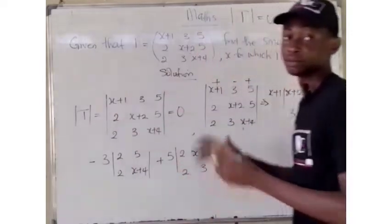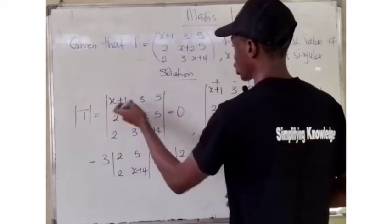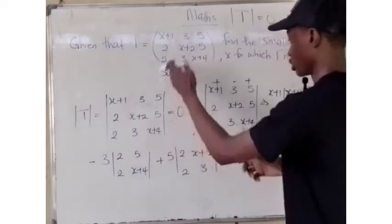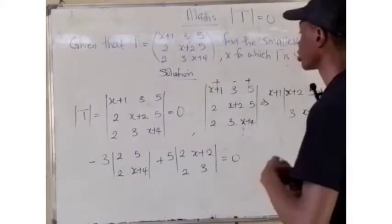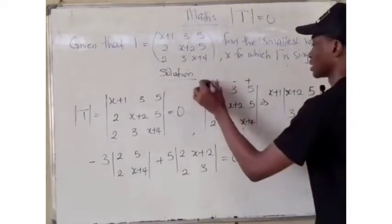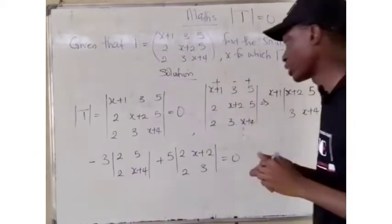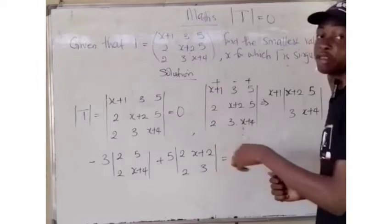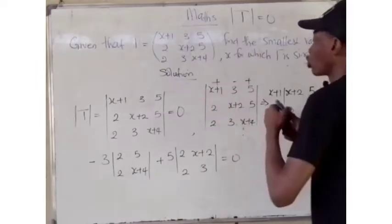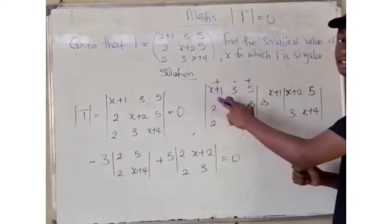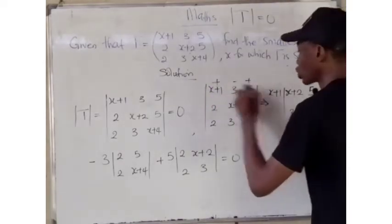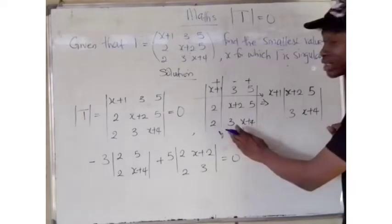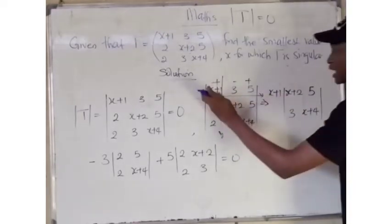We bring in all the elements of the matrix: x plus 1, 3, 5, 2x plus 2, 5, 2, 3, and x plus 4. The determinant should give us 0. To find the determinant, the normal way is to use the cofactor method with plus, minus, plus signs. We take the first element in the first column, which is x plus 1, and we find its minor matrix — closing the row and column we are left with this minor matrix — and multiply.